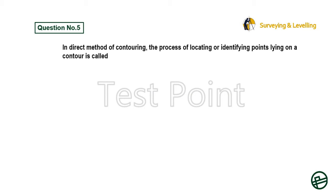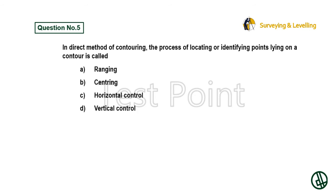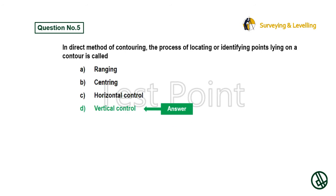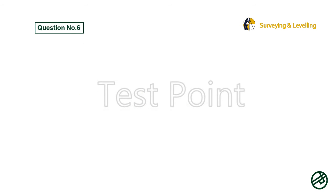Question 5: In the direct method of contouring, the process of locating or identifying points lying on a contour is called — Option A: Ranging. Option B: Centering. Option C: Horizontal control. Option D: Vertical control. Answer is Option D: Vertical control.